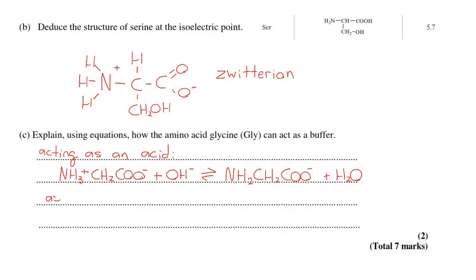Acting as a base, again you're going to draw the zwitterion but this time reacting with H3O+. The H3O+ will donate a proton to the amino acid therefore you'll end up with NH3+, CH2, COOH plus water.